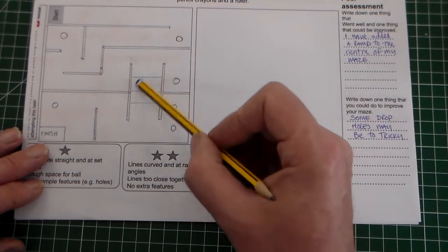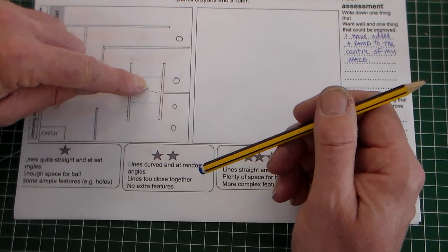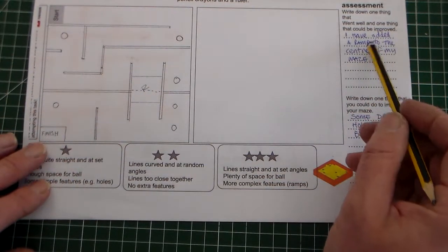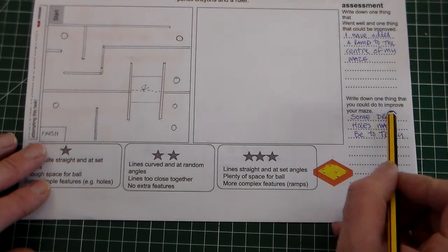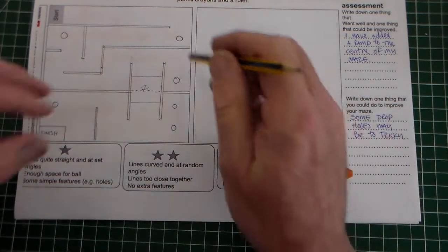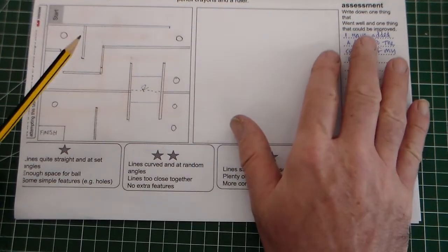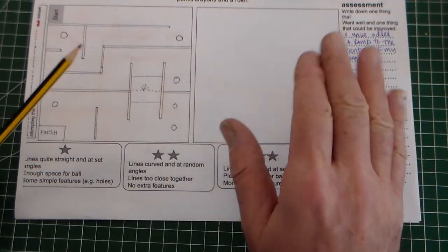Write down one thing that went well and one that could be improved. So I've said I've added a ramp to the center of my game, so there's a ramp here so the ball has to roll up and then roll down. So that's a good thing. Write down one thing that you can improve: some drop holes might be too tricky. So we can see here that this drop hole here may be too tricky. So that's something we need to do in our next iteration.